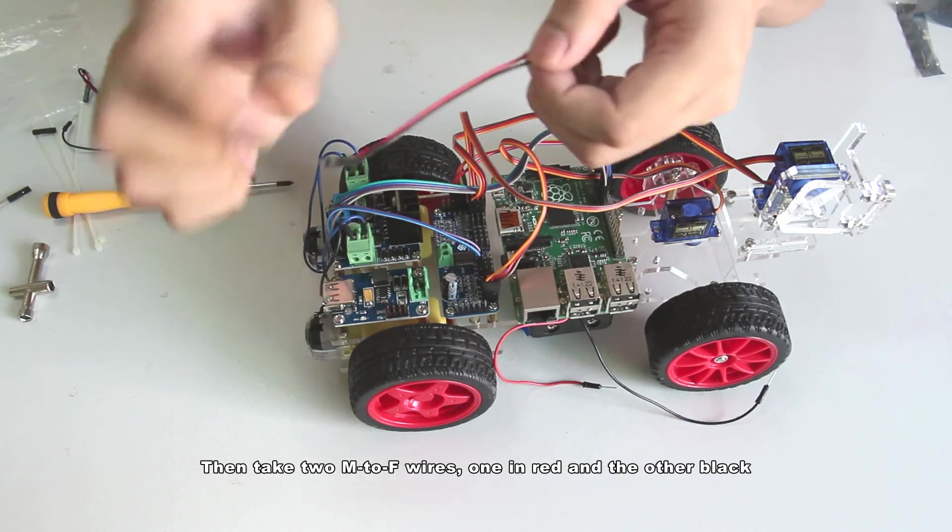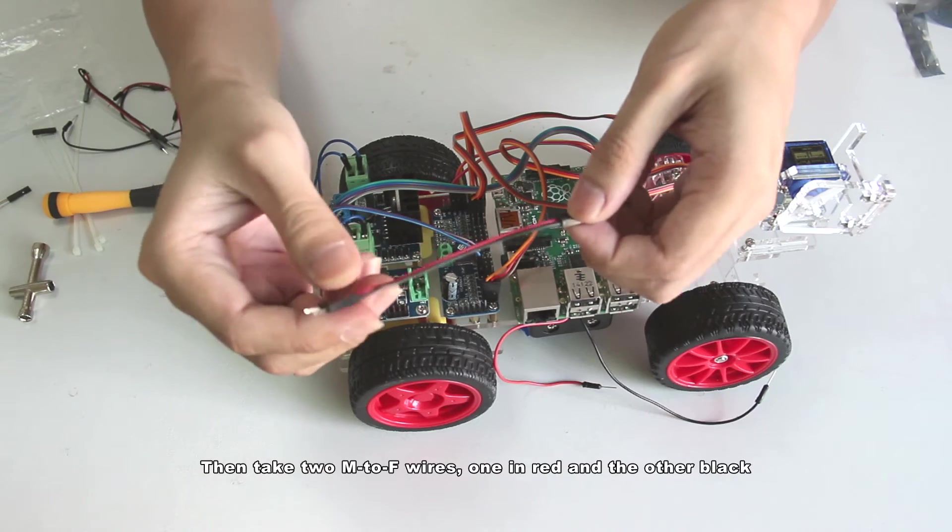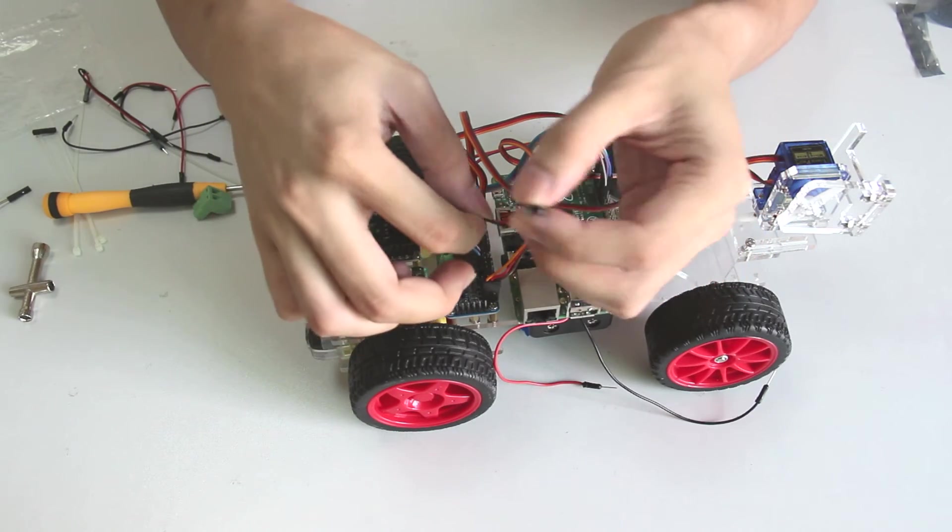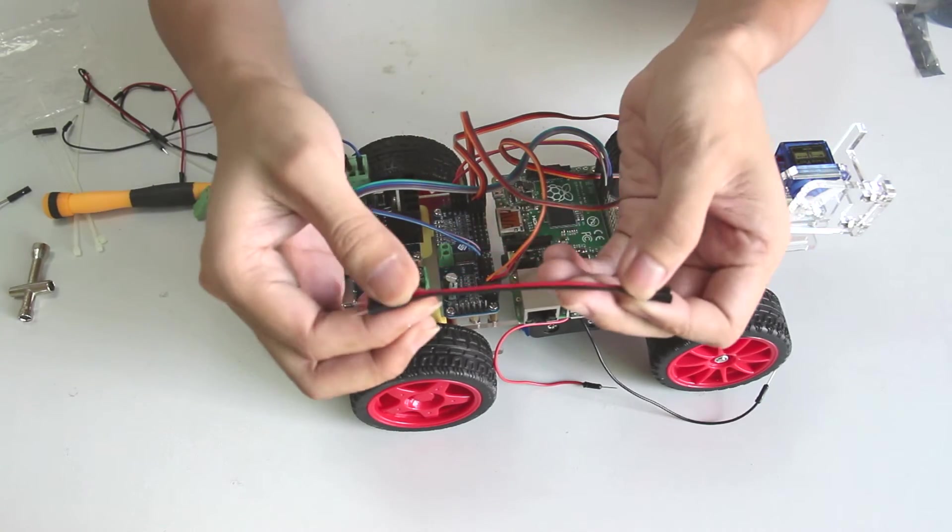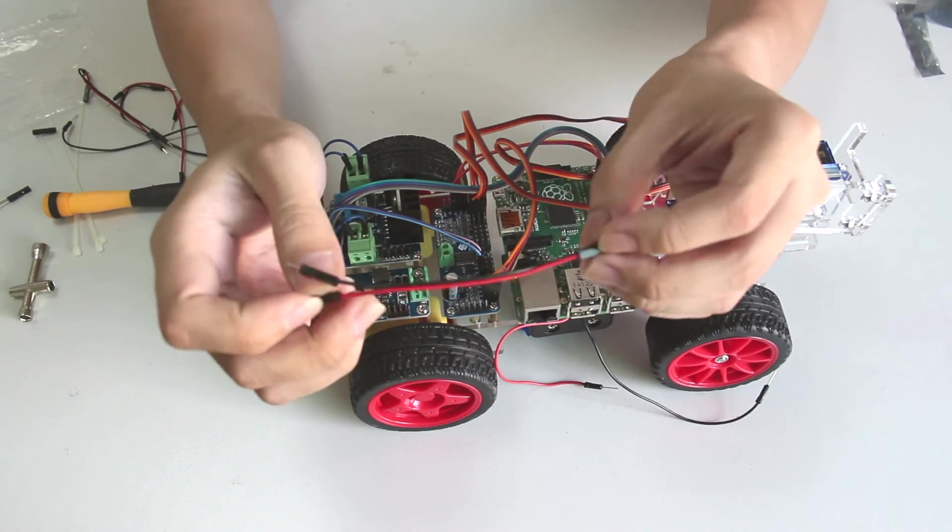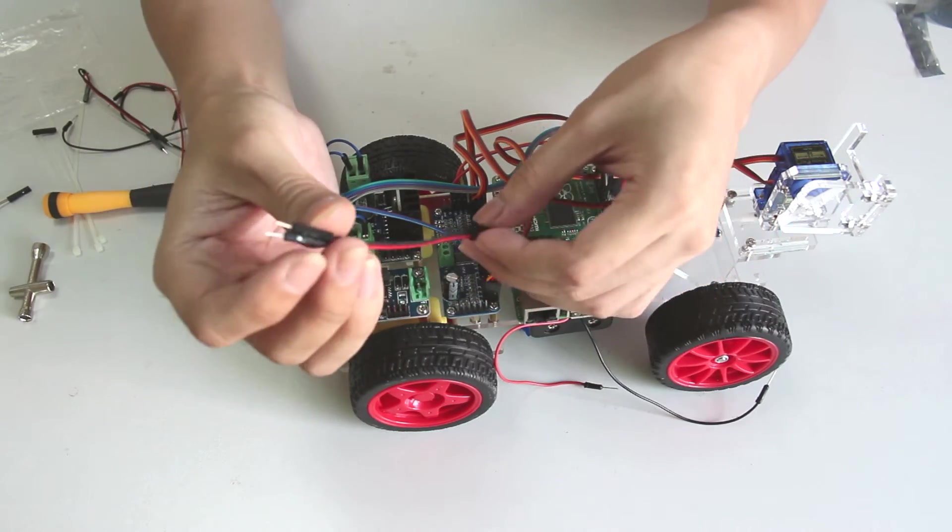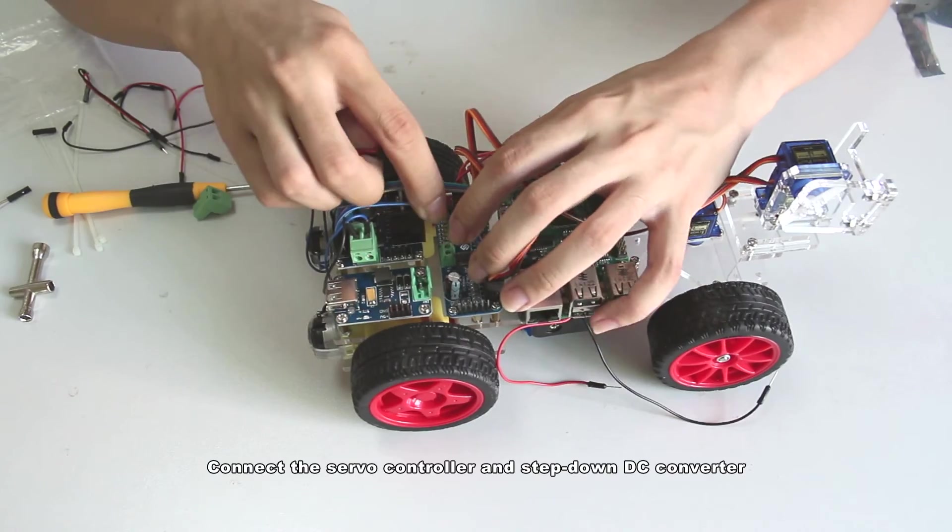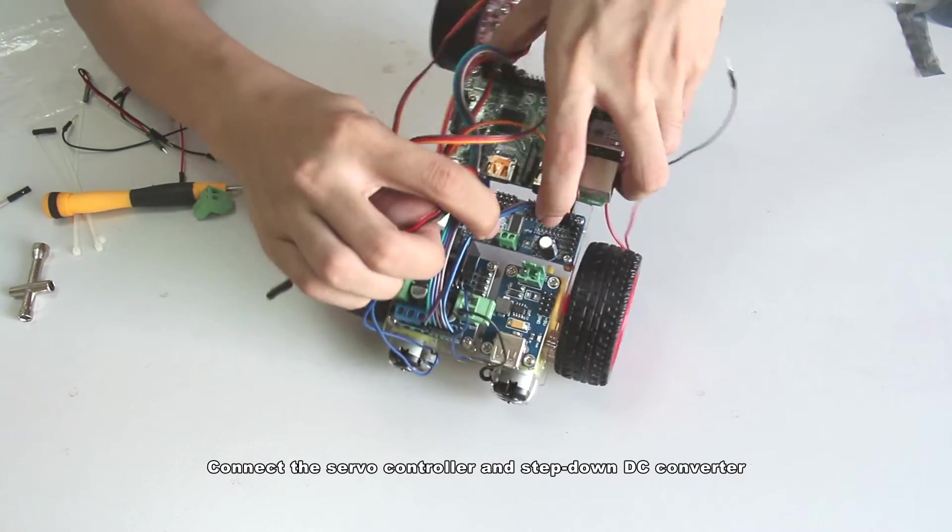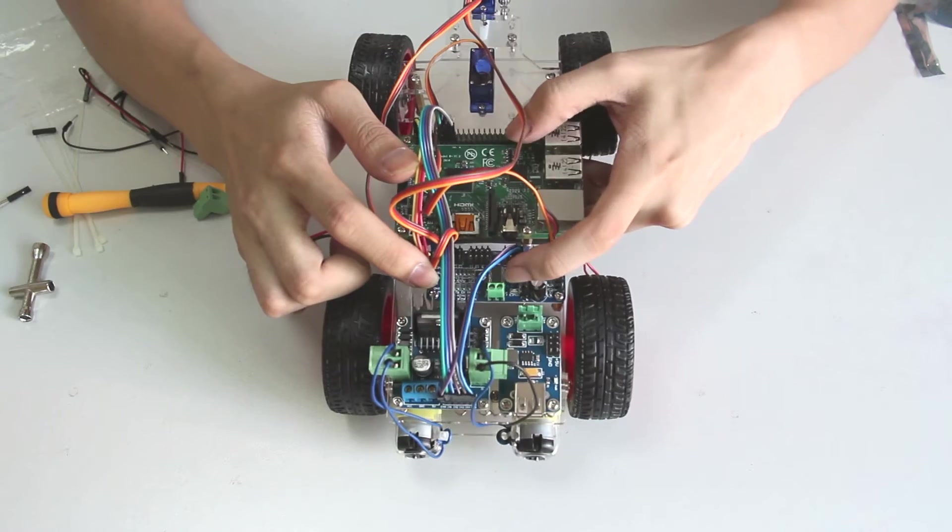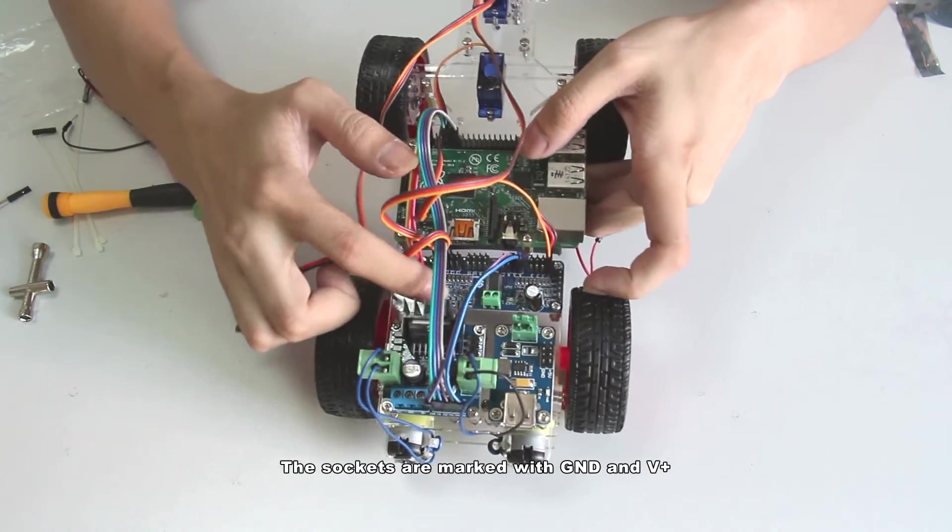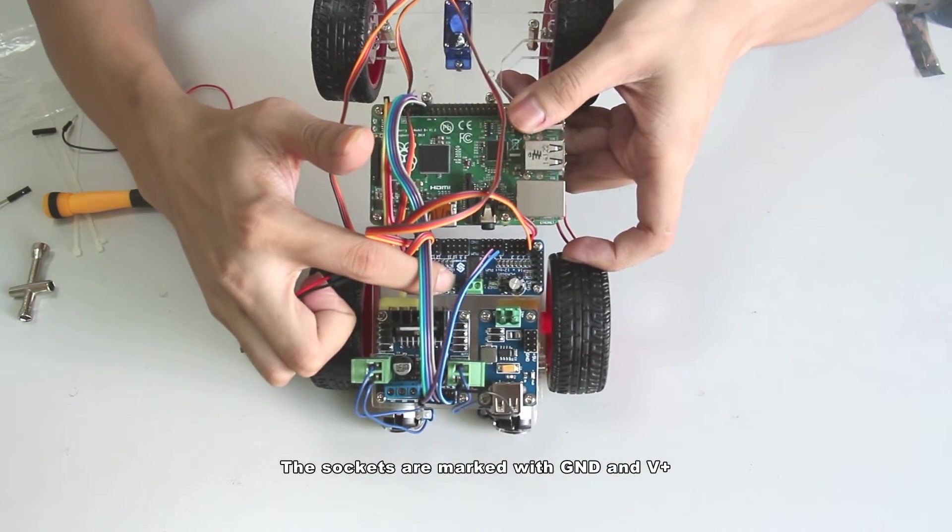Then take 2 male to female wires, one in red and the other black. Connect the servo controller and step down DC converter. The sockets are marked with GND and voltage anode.